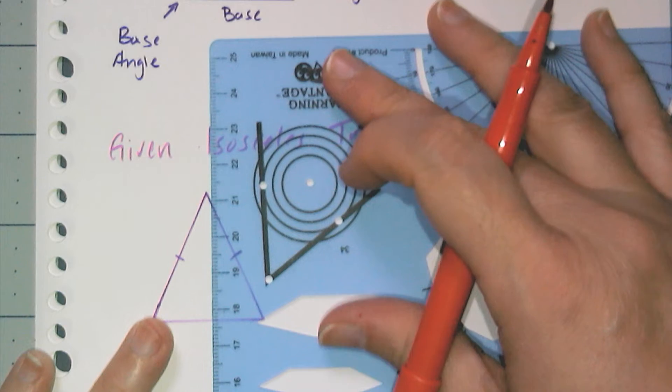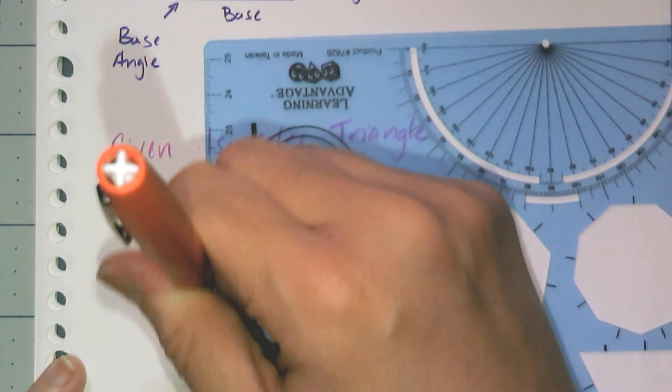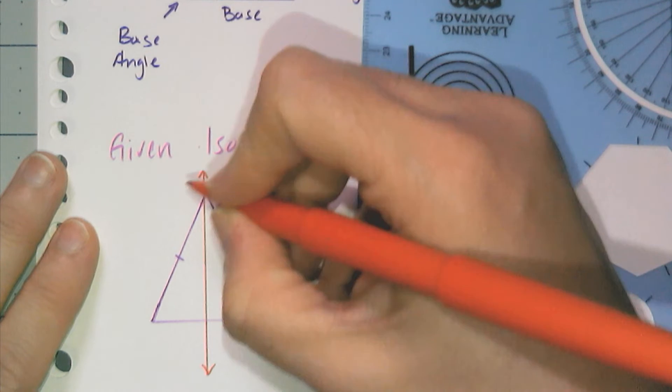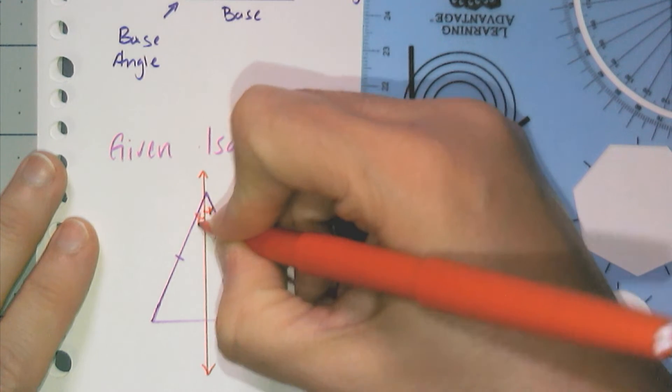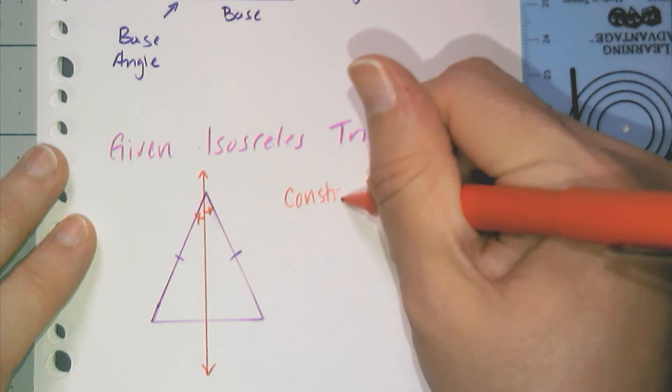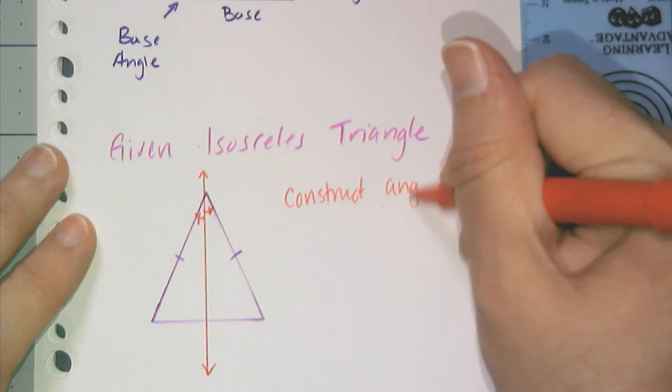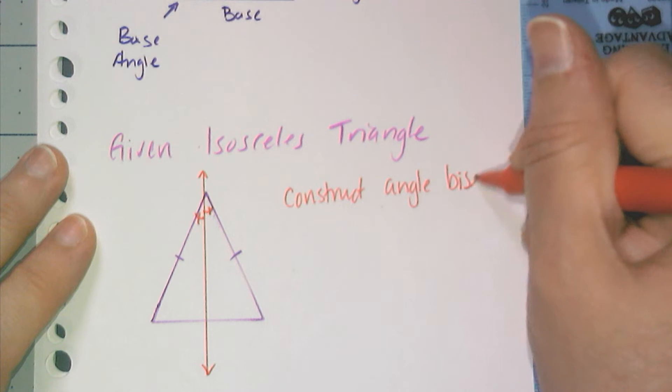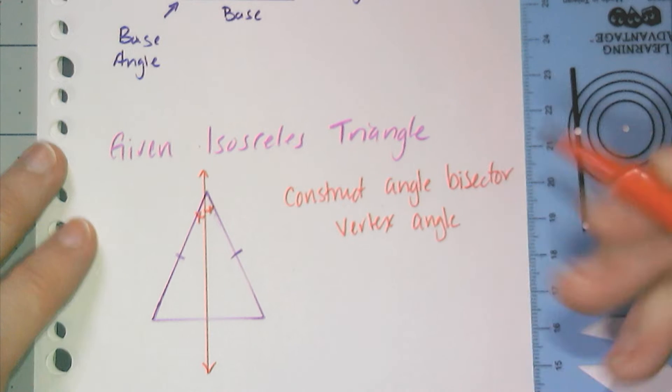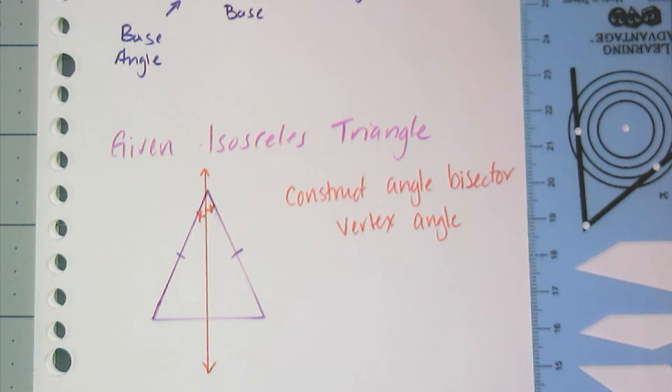Specifically, I can go ahead and construct, let's say I'm constructing, terribly drawn, oh my gosh. Let's call this the angle bisector. So we're going to construct the angle bisector for the vertex angle. Now I'm not actually doing the constructions, I'm just going to imagine.